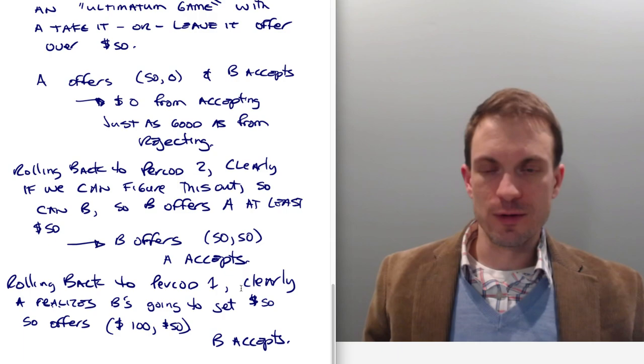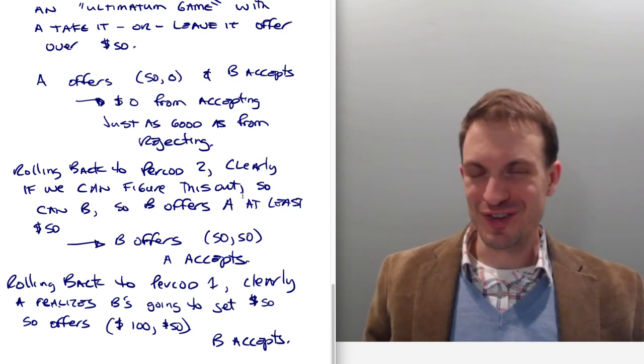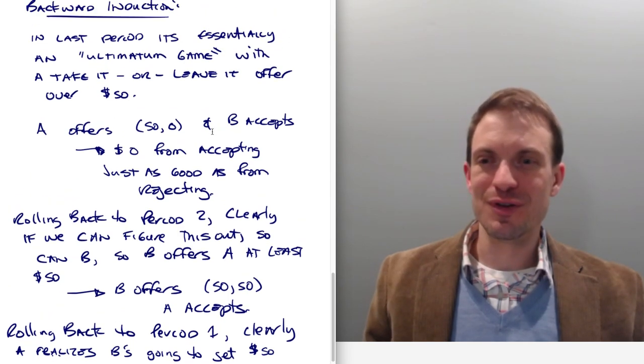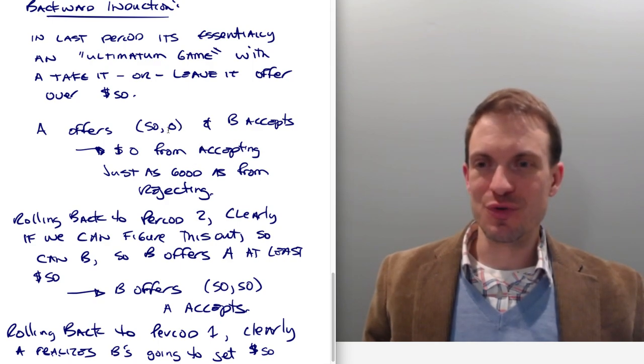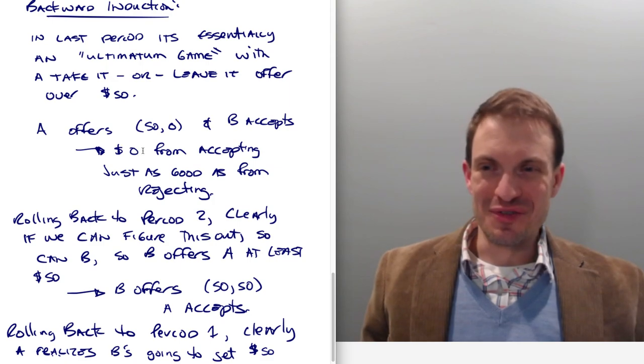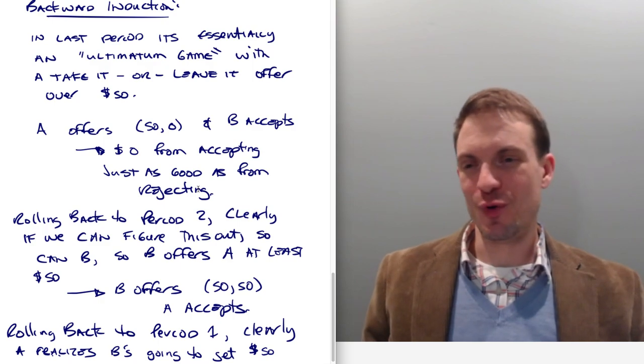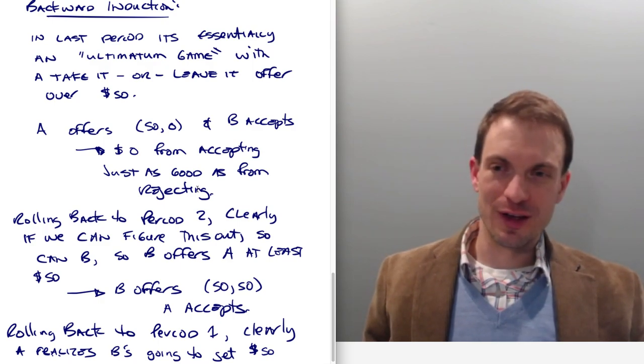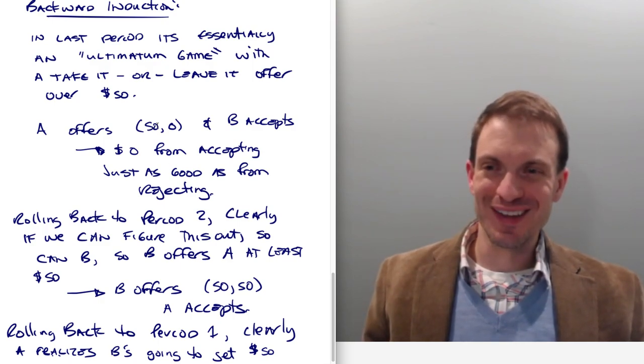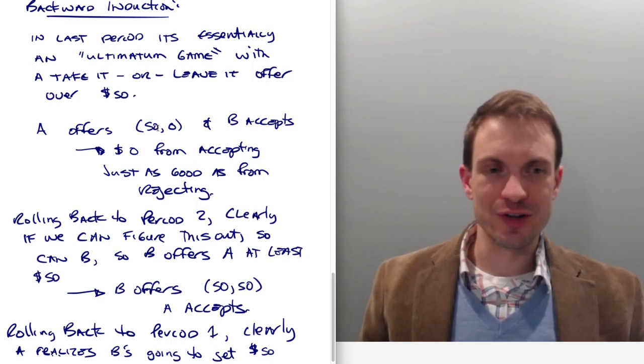On average, I think a lot of behavior sort of converges to theory. That said, you can think of some other motivations that could enter. So for instance, and maybe you're thinking about this as I'm going through this. Well, what happens if we get to a situation where B actually doesn't think that zero from accepting is just as good as from rejecting? Maybe B is motivated by spite or has some interest in diminishing, some interest in taking this 50 away from A.